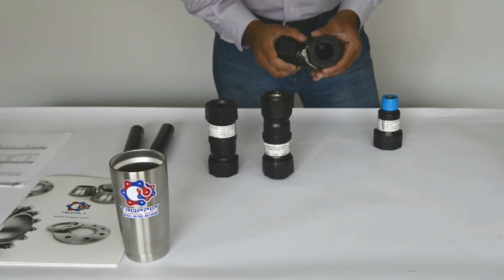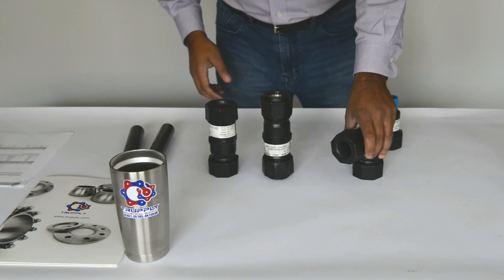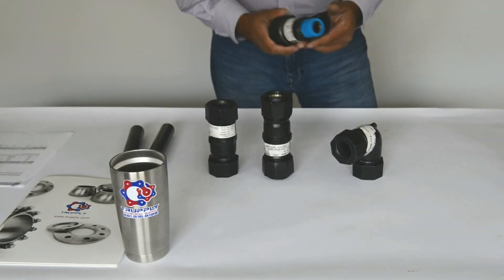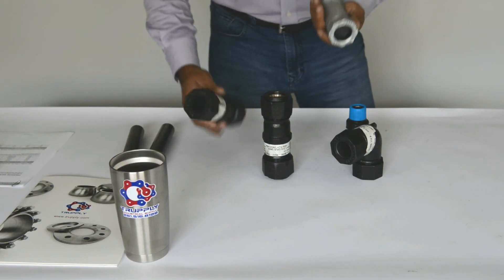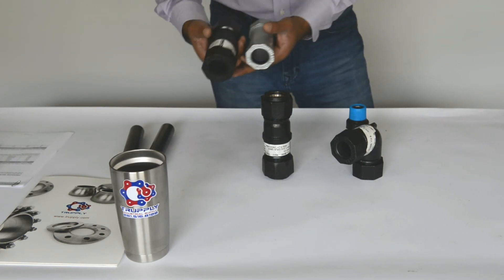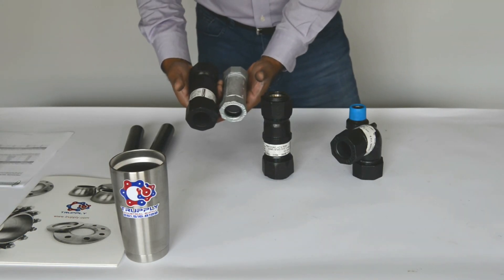This is a Style 90 compression elbow. And this is a Style 90 male adapter. Once again, if you compare it with the Style 65, you can see much more heavier, much more beefier connection.